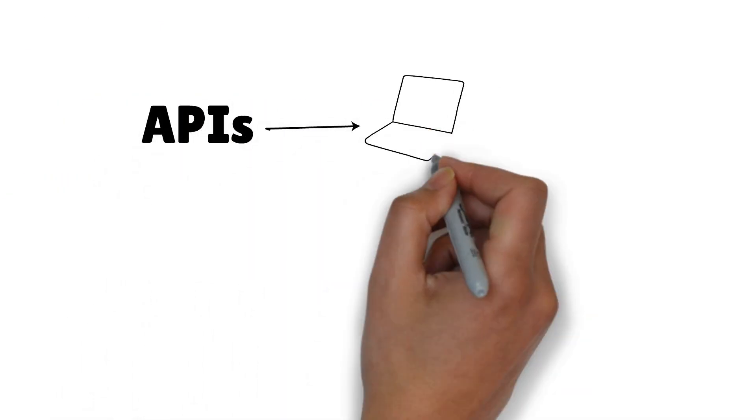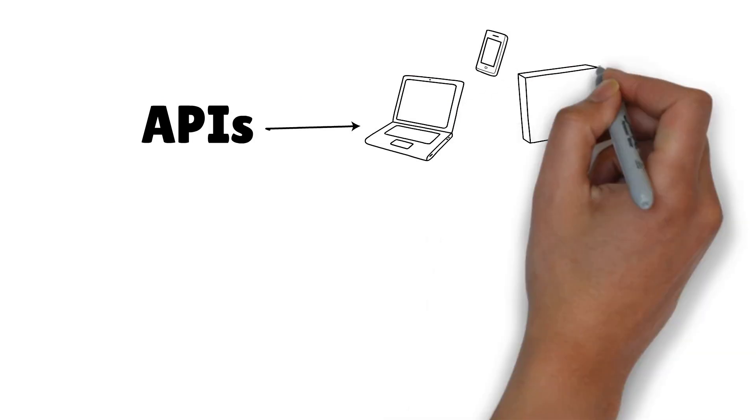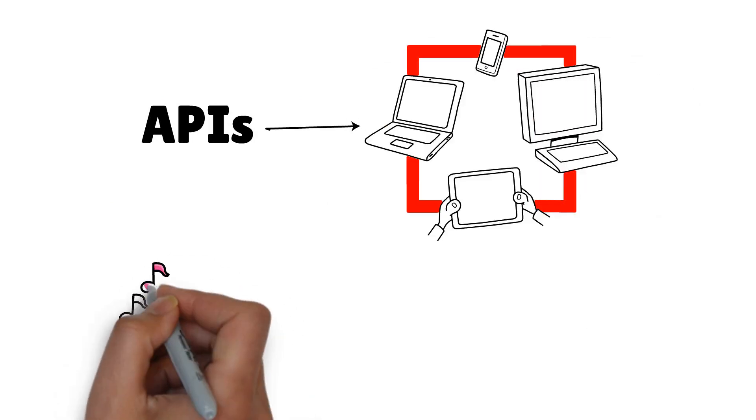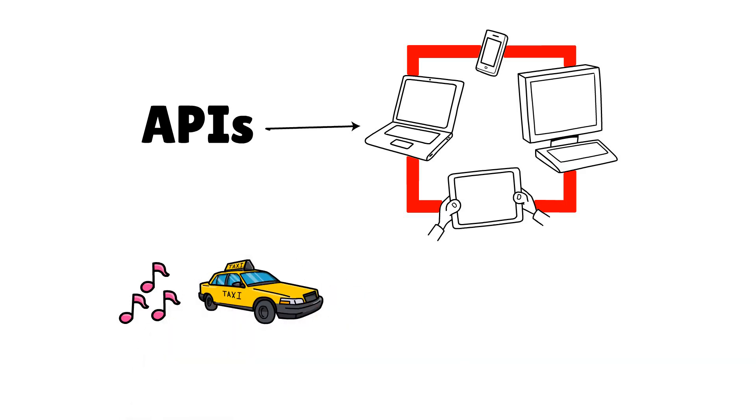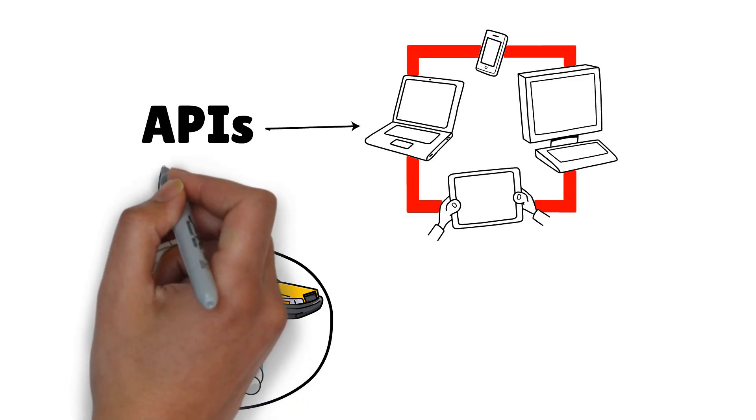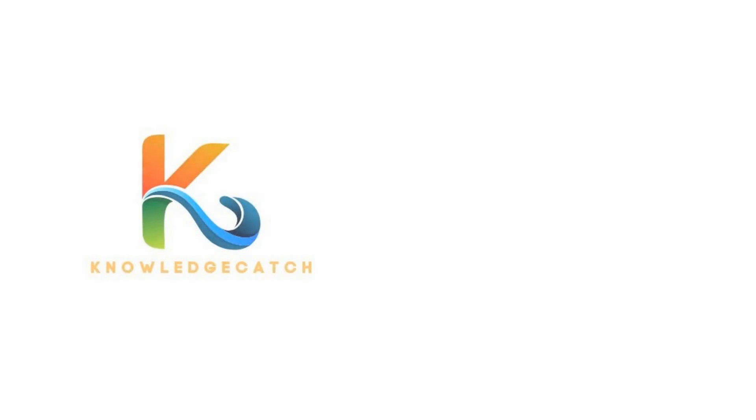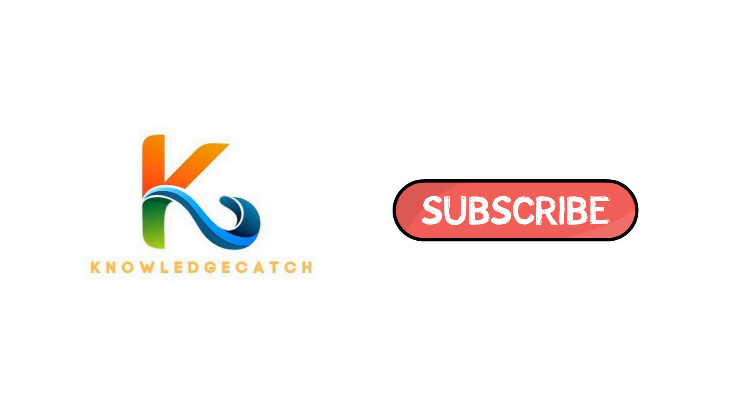APIs are the backbone of the digital world, connecting apps, systems, and devices effortlessly. Next time you share a song, book a cab, or check the weather, remember, APIs made it happen. If you've enjoyed this breakdown, don't forget to hit the subscribe button on Knowledge Catch for more fun and simple tech explanations. Thanks for watching.